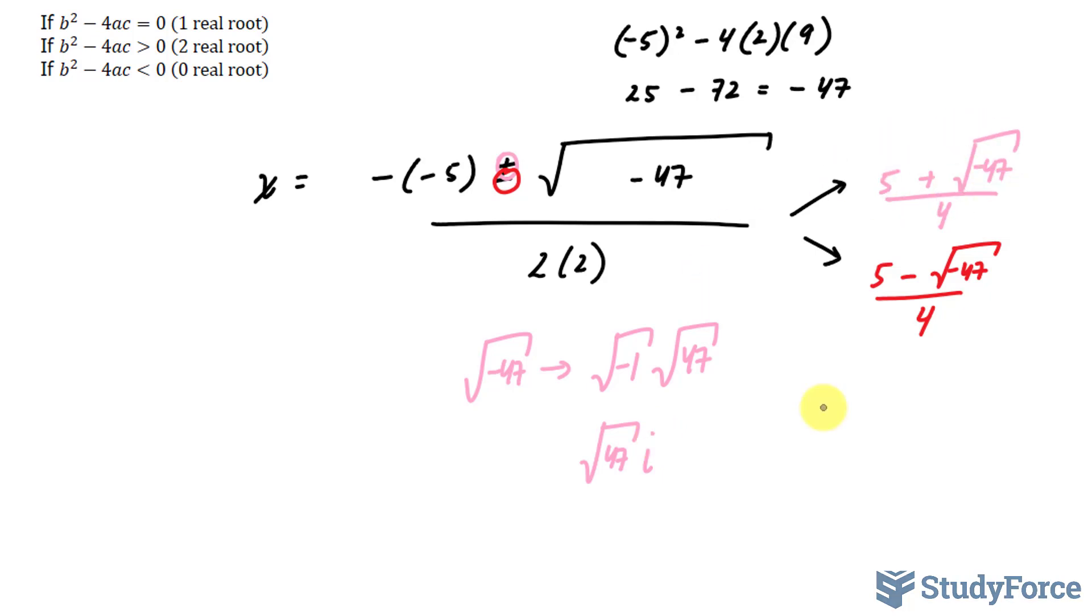So your final answer for this is 5 plus the square root of 47 i, and this 4 will be distributed to both of these terms, because complex numbers always are in the form of a plus bi, where i represents your imaginary number. 5 over 4 and the square root of 47 i over 4, that right there is your final answer. That is the complex number.